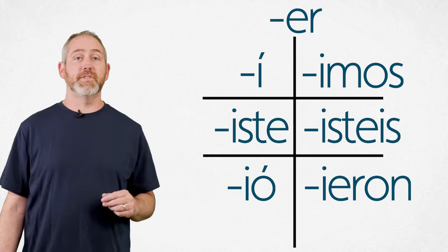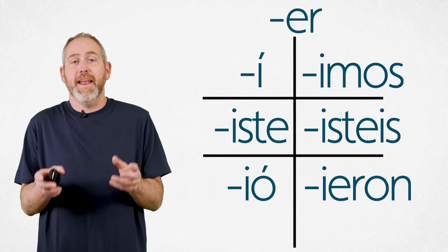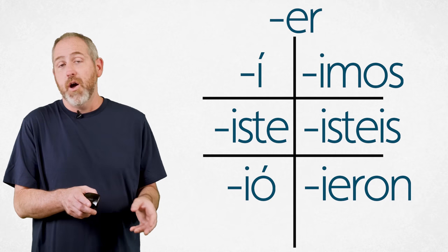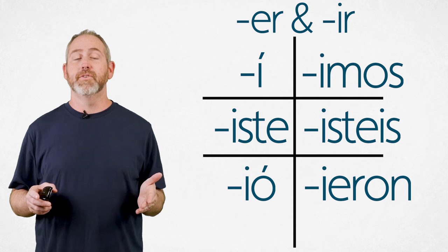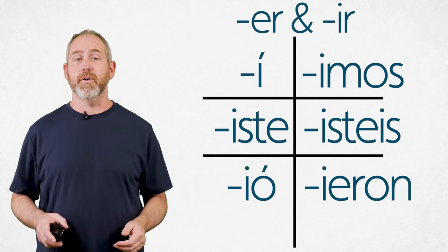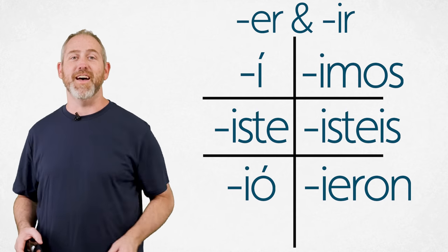Now here's the secret. ER and IR verbs have the same endings in the past tense. So you've just learned IR verbs as well. Knocked out two things in one shot. That's awesome.